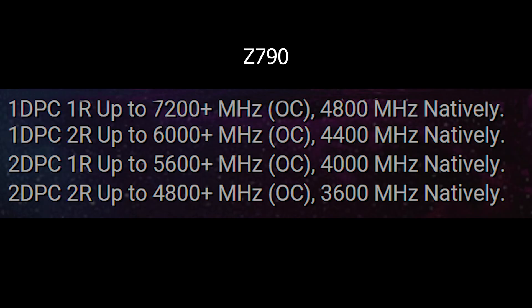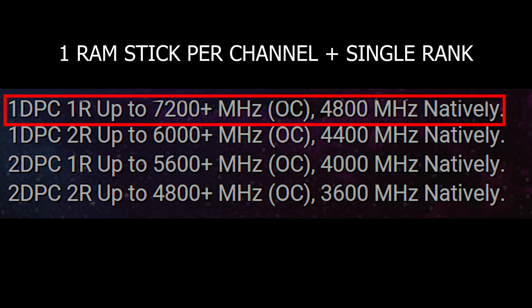For example, we have this ASRock Z790 motherboard. If you look at the spec page, the optimal configuration for the highest speed will be to have one RAM stick per channel that is also single ranked — so two sticks in total.